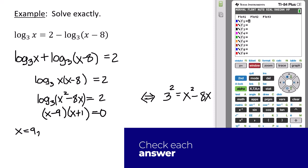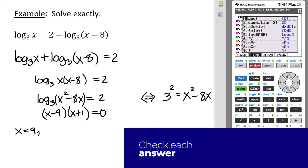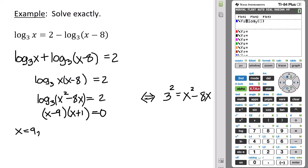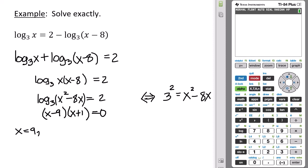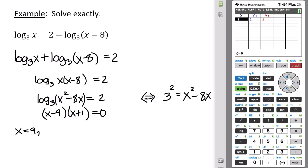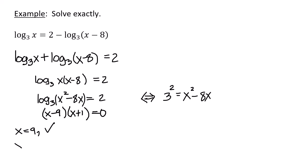Checking x equals 9 using the calculator confirms that log base 3 of 9 does equal 2 minus log base 3 of 1 — this checks out. For x equals negative 1, log base 3 with an argument of negative 1 is undefined — negative 1 is not in the domain. Therefore the solution set contains only the value 9.